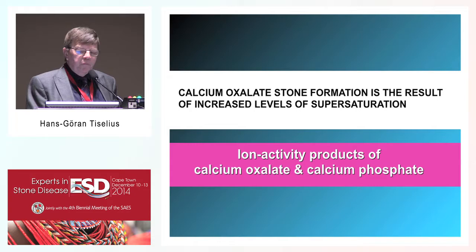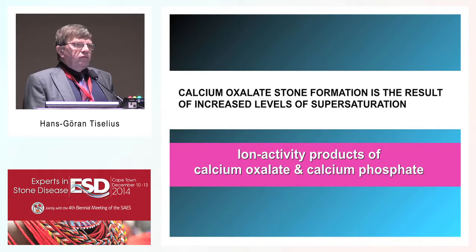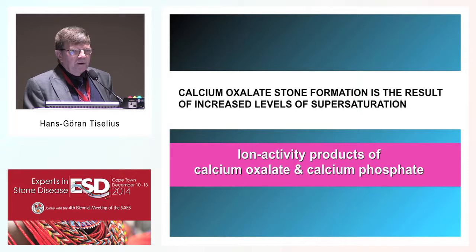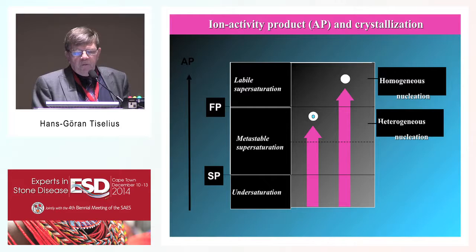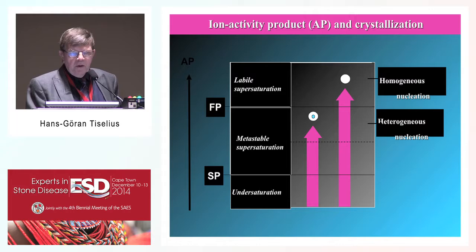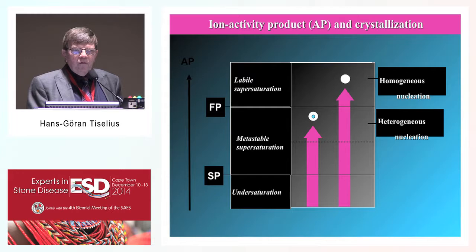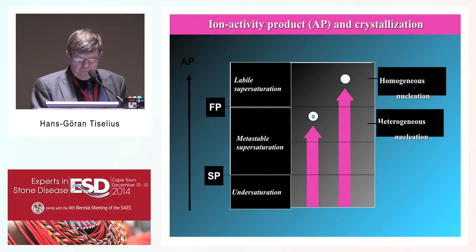This correlation is still almost the only way in which patients are clinically evaluated today, by measuring the ion activity products. From a physical chemical point of view, it is assumed that precipitation of calcium oxalate crystals occurs in the upper part of the metastable range of supersaturation as a heterogeneous nucleation requiring a promoter, whereas homogeneous nucleation at high labile supersaturation has been considered impossible because these very high ion activity products are never met, at least not in final urine.